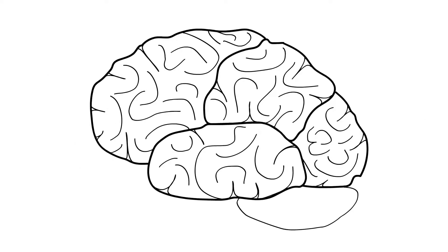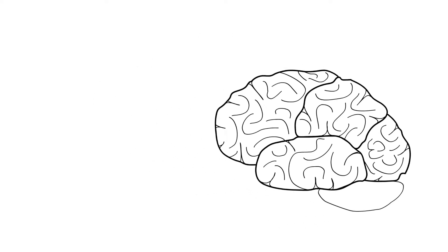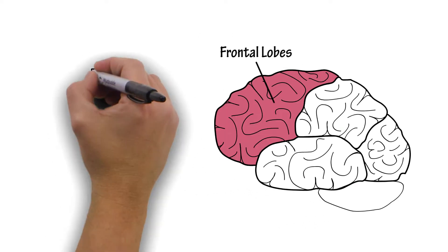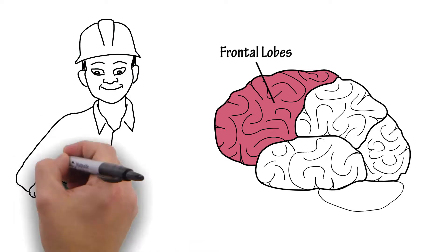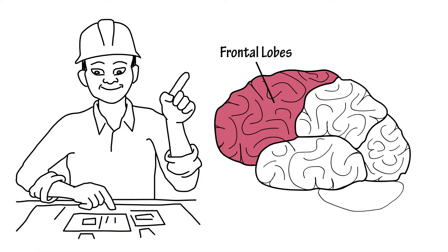Research has shown that the brain continues to prune and rewire itself well into our twenties when the frontal lobes mature. The frontal lobes control judgment, insight, and impulse control.